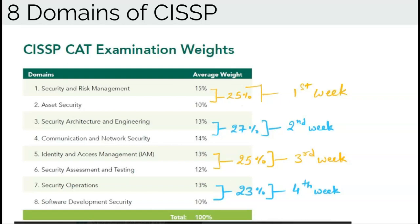Domain 8 covers Software Development Security with a weight of 10%. Our target is to cover all eight domains in 30 days, so we will cover approximately two domains every week.